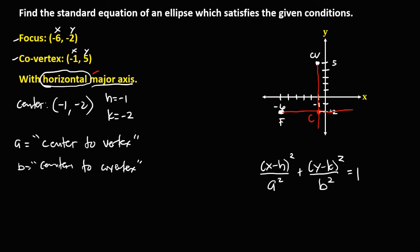From the center to the co-vertex, we use the counting method. Starting on the next point from the center, we count: 1, 2, 3, 4, 5, 6, 7. Therefore b is equal to 7. Then to solve for c, that's center to focus. Using the counting method from center to focus: 1, 2, 3, 4, 5. Therefore c is equal to 5.